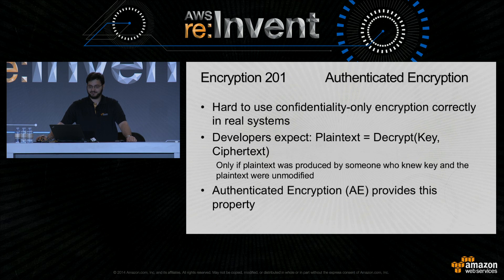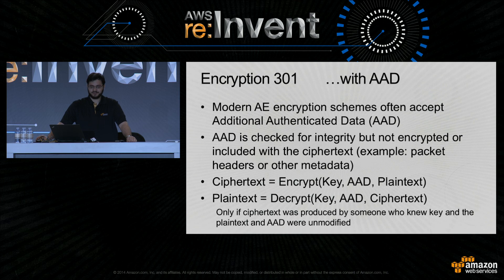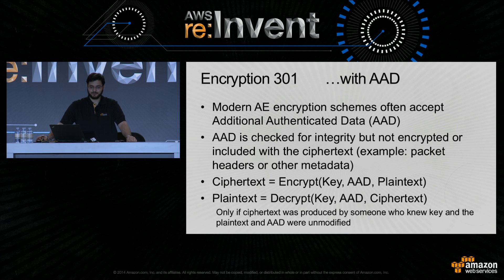Examples of authenticated encryption include things like AES-GCM. Modern authenticated encryption schemes often will take something called additional authenticated data — some data that isn't being encrypted but is included in the cryptographic tag. You can think of it as data that will be signed but not necessarily included in the ciphertext. Decryption will only succeed if both the ciphertext and the AAD were not modified. One example where this is commonly used is packet headers, where you may encrypt the payload and use the packet headers as additional authenticated data.